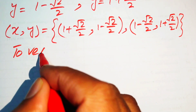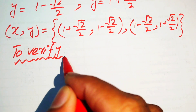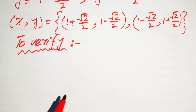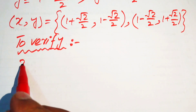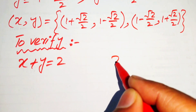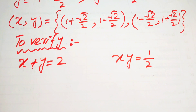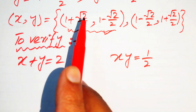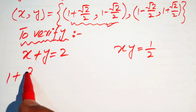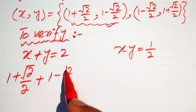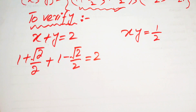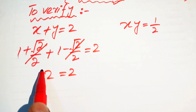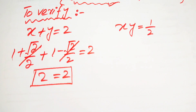Now we verify these solutions. I will verify the first solution; you can verify the second yourself. The given equations are x plus y equals 2 and xy equals 1 over 2. Substituting the first solution into equation 1: (1 plus square root of 2 over 2) plus (1 minus square root of 2 over 2) equals 2. The square root of 2 terms cancel, and 1 plus 1 equals 2, confirming the first equation is satisfied.